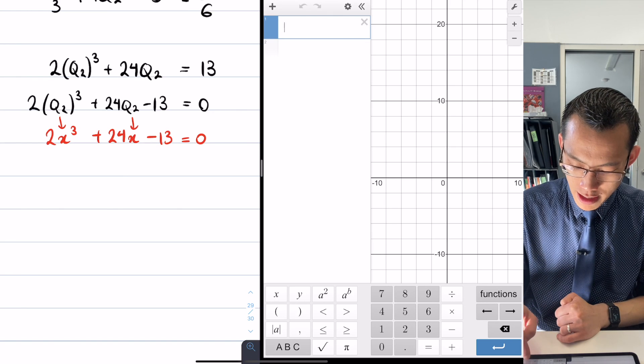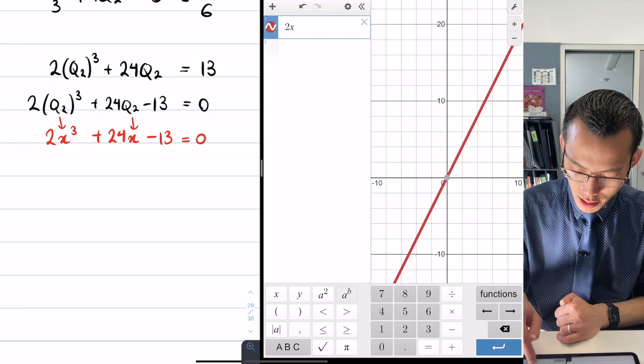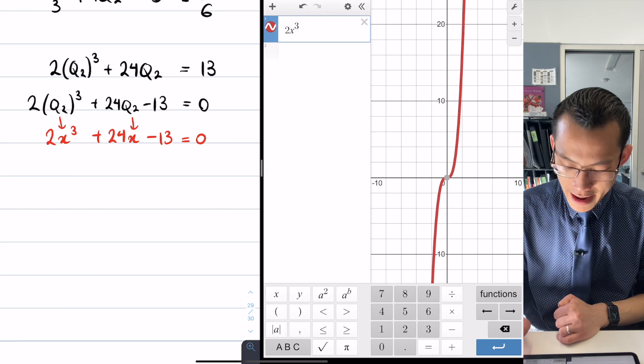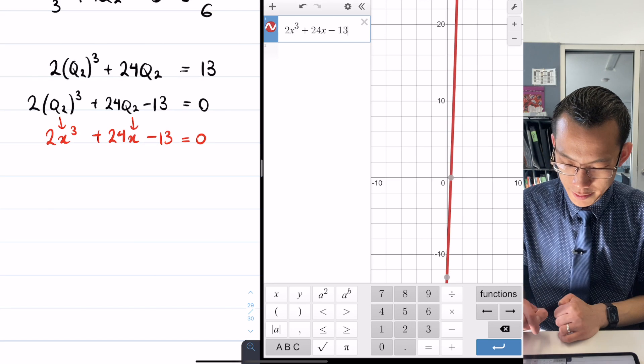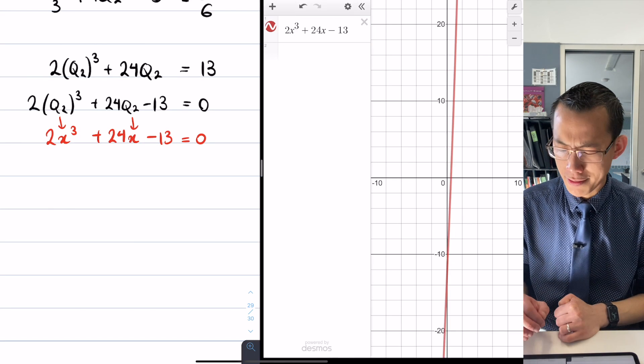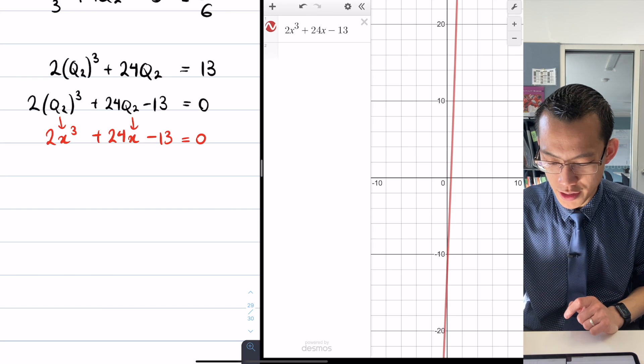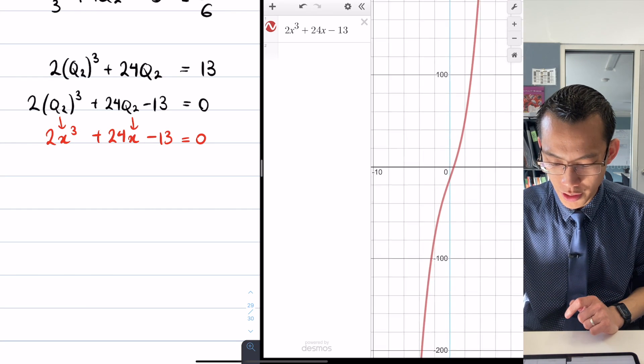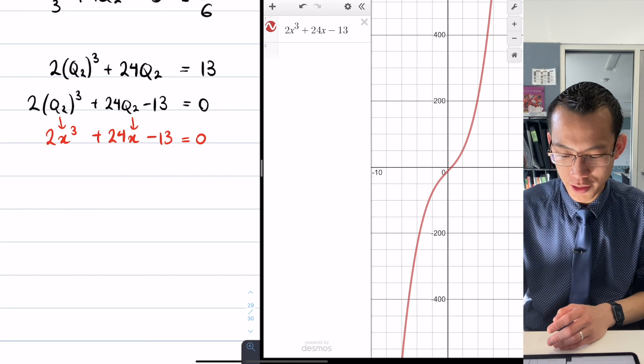I can graph this equation and find where it equals 0, find its x-intercept. Let's have a go. I'm going to write 2x³, now I'm going to write 24x, and then minus 13. The scale is not very helpful to us, so if I just sort of pinch in, there's the familiar cubic looking shape.